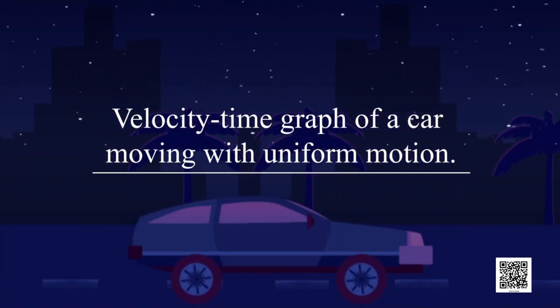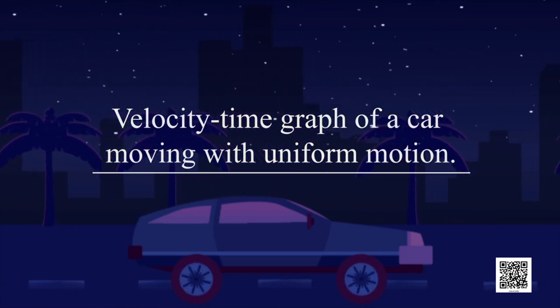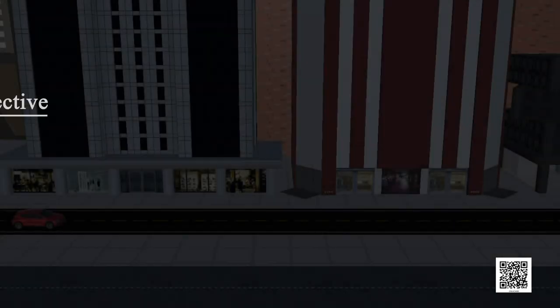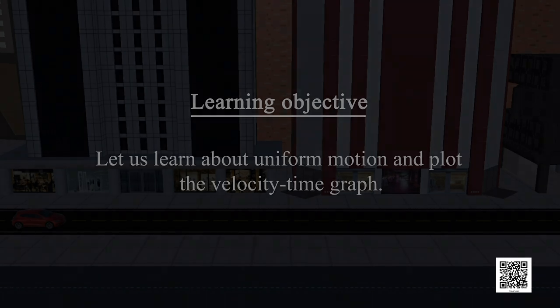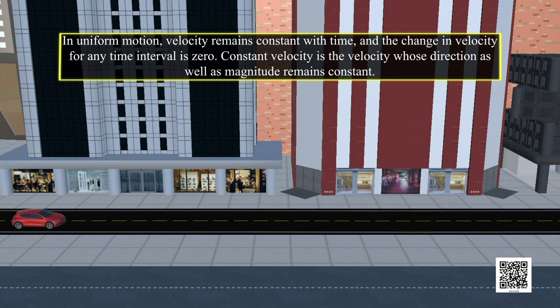Velocity-time graph of a car moving with uniform motion. Learning objective: Let us learn about uniform motion and plot the velocity-time graph. In uniform motion, velocity remains constant